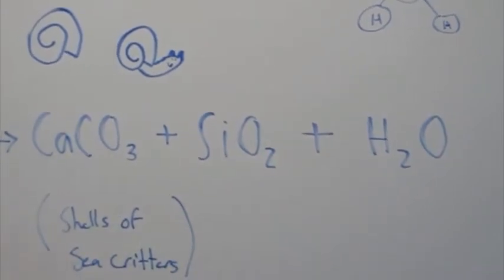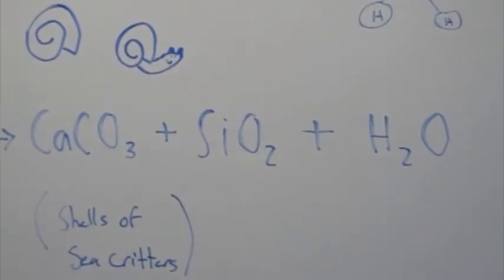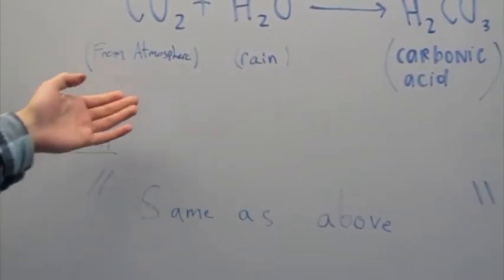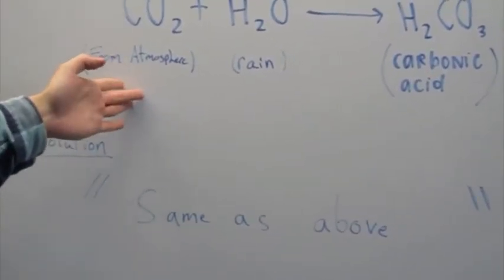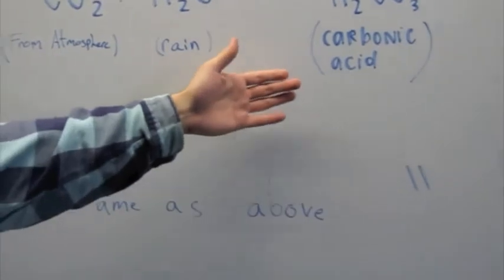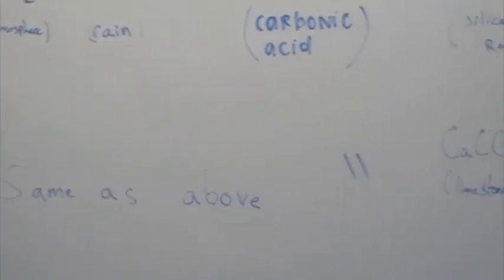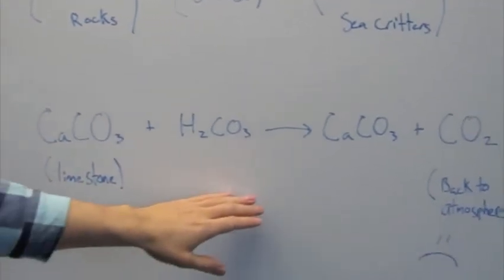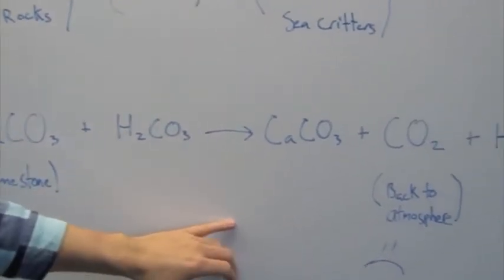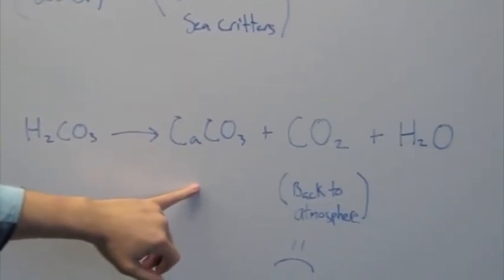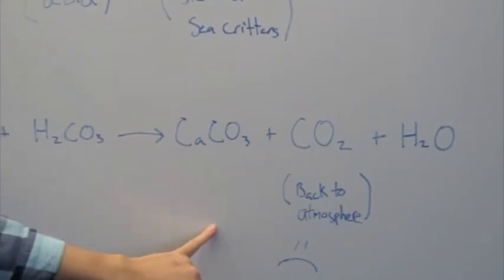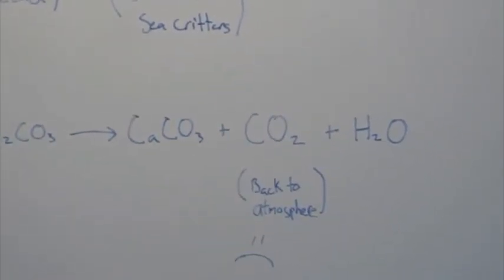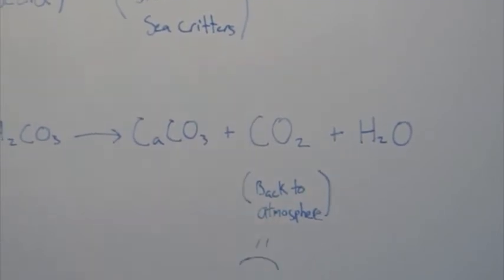This removes CO2 from the atmosphere. Dissolution is really the same as hydrolysis — it takes CO2 from the atmosphere and rain and creates carbonic acid — except dissolution reacts with limestones. Limestones then run off into the ocean and create CaCO3, similar to hydrolysis, but there is no long-term storage of CO2, which goes back into the atmosphere, and you also get H2O.